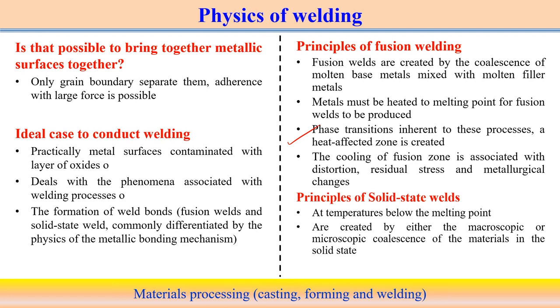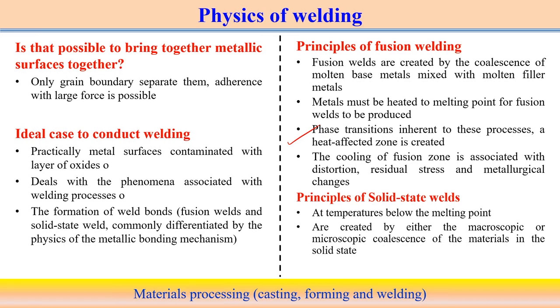Another category is the solid state welding process. Here, there is no need to reach the melting point — the maximum temperature is about 70 to 80 percent of the melting point temperature. Bonding is created by macroscopic or microscopic coalescence between two components. In solid state welding, we try to remove the contaminated oxide layers from the metallic surfaces and bring the two components together so that bonding occurs at the macroscopic or microscopic level.